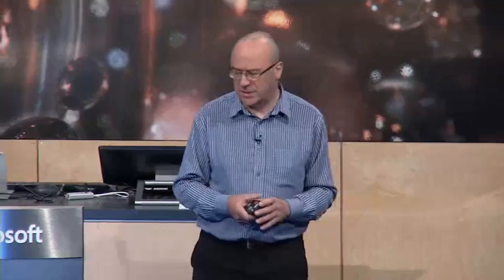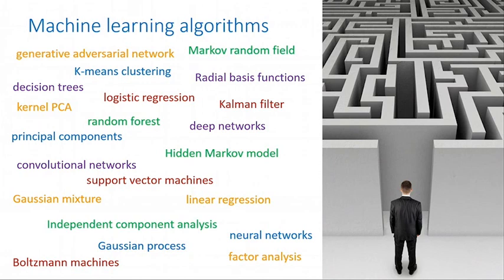Machine learning is probably a fairly tough field for newcomers right now. There are literally thousands of different algorithms. Conferences are exploding — NeurIPS had 6,000 people last year, hundreds and hundreds of papers being published. It's quite bewildering. How do you find your way around this complex field, and in particular, if you're trying to solve a practical application, which of these thousands of different algorithms and techniques should you be using?